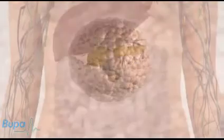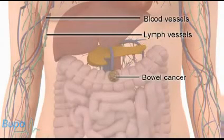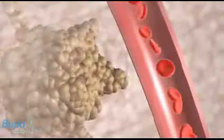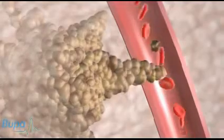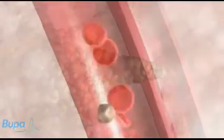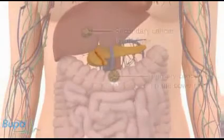Tumours that invade the surrounding tissue and spread to other parts of the body are known as malignant tumours, or cancer. Cancer cells can invade blood and lymph vessels. These provide a route for spread to other parts of the body to form secondary cancers. This is called metastasis.